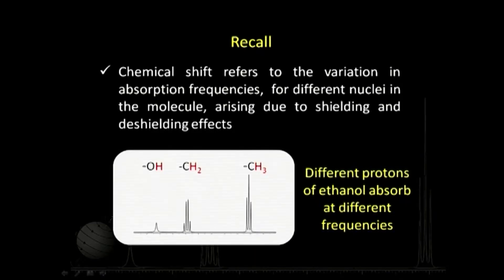We showed the spectrum of ethanol, where there are three different types of protons. The methyl group comes somewhere here, the methylene comes somewhere here, and the OH comes at a different position. That means all three types of protons are different — they come at different frequencies. We will now try to quantify this: what does the position of a signal mean, and how do we label or tag it?